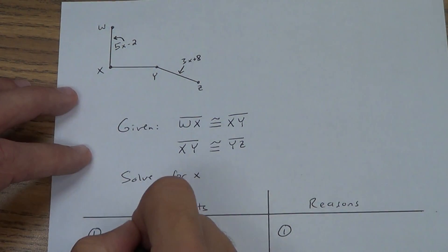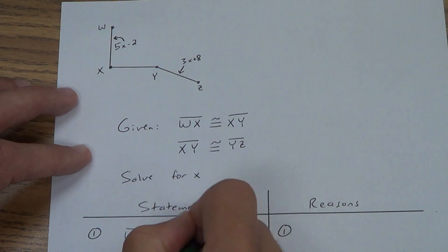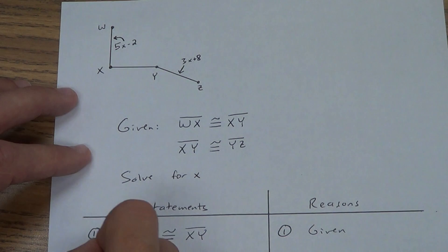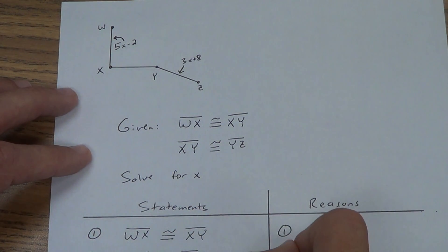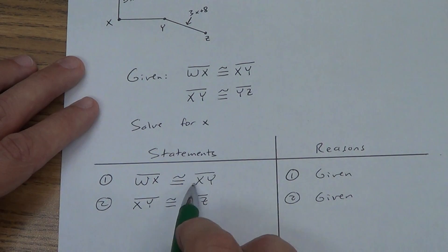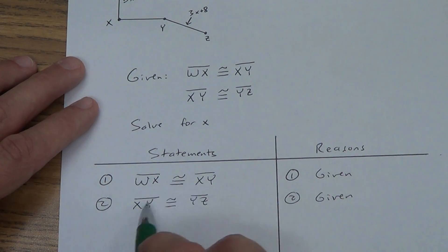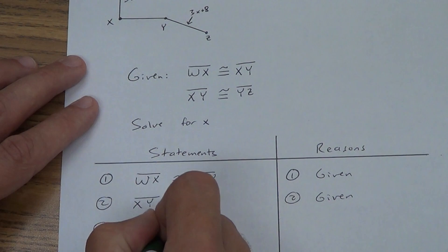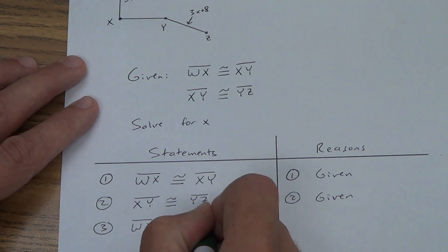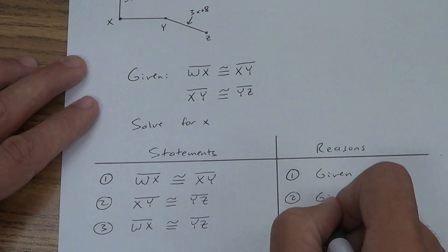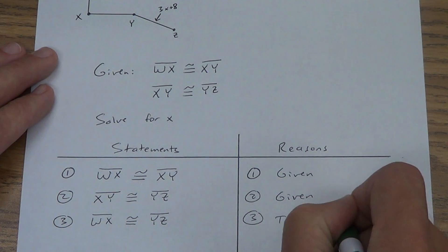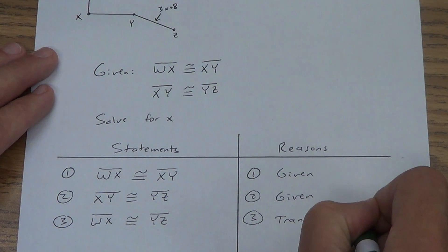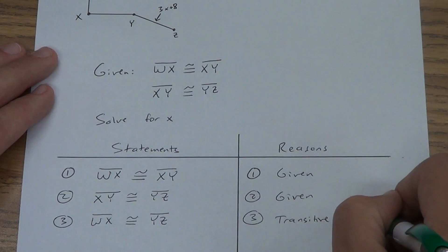Statements. I have two givens: WX is congruent to XY — given. XY is congruent to YZ — given. Now, we just learned it — look what we got here again. XY is repeated, it's in the middle, so we skip it: WX is congruent to YZ. What's our reason there? What do we call it when we skip something? Transitive property — in this case not of equality, look at what we said: congruence. Transitive property of congruence.